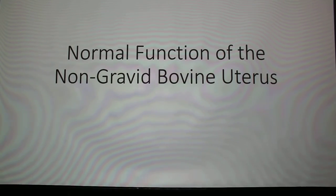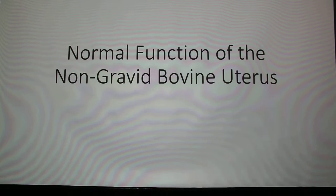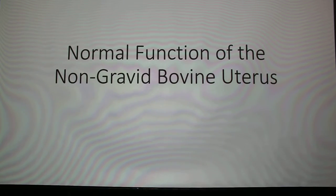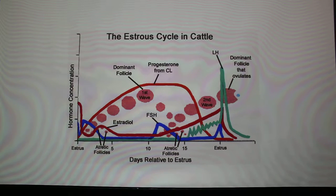I'm going to talk about the normal function of the non-gravid bovine uterus. Non-gravid means not pregnant — a gravid uterus means there's a pregnancy in there. I've dissected pregnant horse uteri, pig, sheep, goats — you name it. But I want to talk about normal function. The estrous cycle in cattle is 21 days from one estrus to another. It's not seasonal, and if they're never pregnant and fed right, it goes year-round.